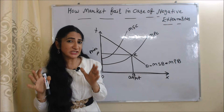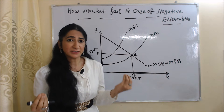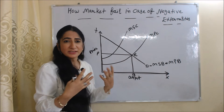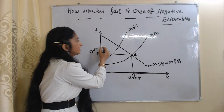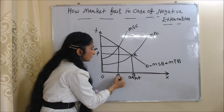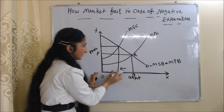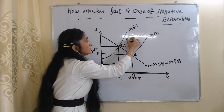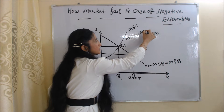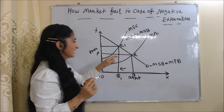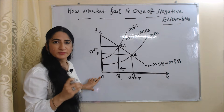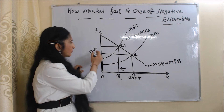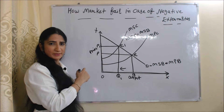That's why government intervention is necessary. When the government imposes taxes on this particular firm, the output of this firm will reduce from OQ to OQ1. The new equilibrium point is E1. At this equilibrium point, marginal social cost equals marginal social benefit. So OQ1 is the socially optimal output, and the socially optimal price is higher than the original OQ price.